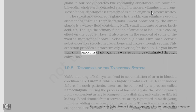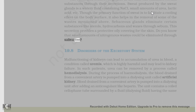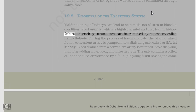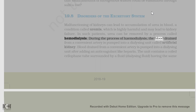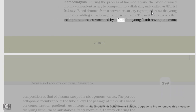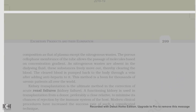Small amounts of nitrogenous wastes could be eliminated through saliva too. Malfunctioning of kidneys can lead to accumulation of urea in blood, a condition called uremia, which is highly harmful and may lead to kidney failure. In such patients, urea can be removed by a process called hemodialysis. During hemodialysis, the blood drained from a convenient artery is pumped into a dialysing unit called artificial kidney, after adding an anticoagulant like heparin. The unit contains a coiled cellophane tube surrounded by a dialysing fluid having the same ionic composition as plasma.